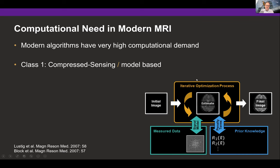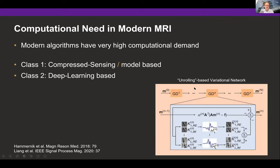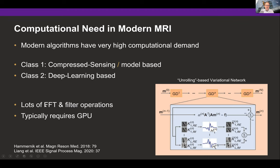This mapping has to be done for each received channel, so really a lot of FFTs happen here. Recently, deep learning based reconstruction algorithms have been introduced. Many of these algorithms unroll the iterative optimization procedure into a long chain of operations, so from a computational perspective it's not much different — also very computationally demanding. In both cases we have a high number of FFT operations and a high number of filter operations that have to be performed.